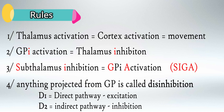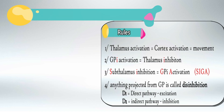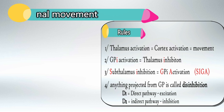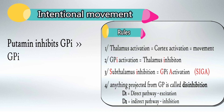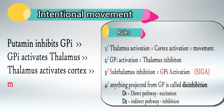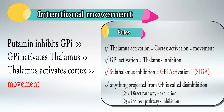Take a second to memorize these rules or write them down so we can practice them. Let's say that you want to move your hand — intentional movement. Simply memorize that any intentional movement starts with the putamen inhibiting the globus pallidus internus. From there you use the rules: globus pallidus internus inhibition causes thalamic activation, thalamic activation causes cortex activation, and this results in movement.